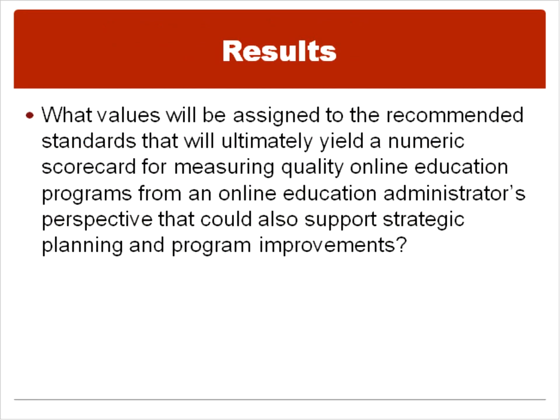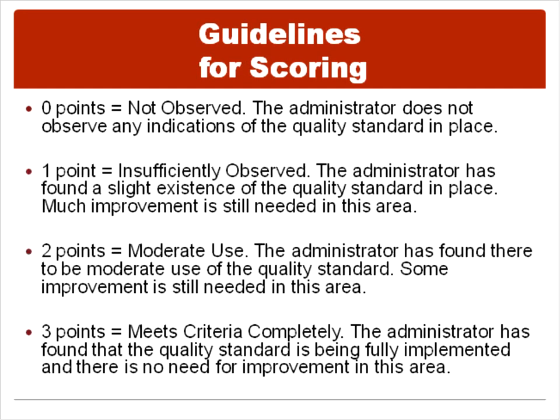The final question was what values would be assigned to the recommended standards that would ultimately yield a numeric scorecard. The panel of experts agreed that the 70 quality indicators could potentially be worth three points each. Zero would mean not observed, one point would mean insufficient, two points would be moderate use, and three points would mean it completely meets the criteria. For one point, the administrator has found a slight existence of the quality standard but much improvement is still needed. For two points, there is moderate use. For three points, the quality standard is being fully implemented and there's no need for improvement.